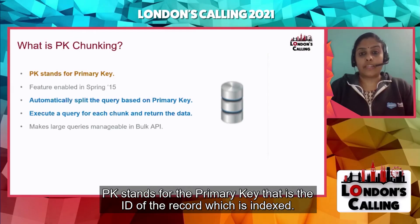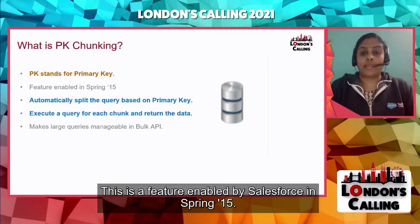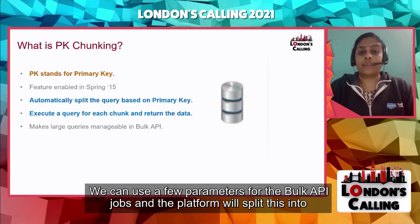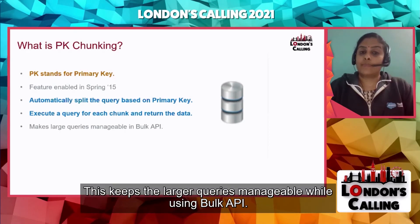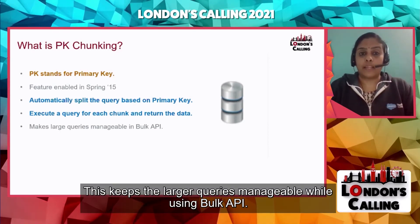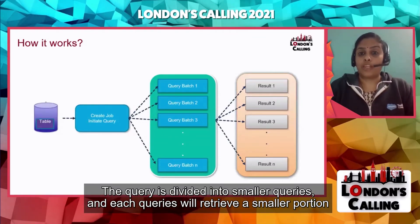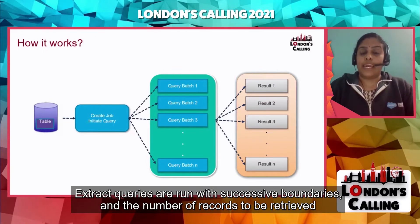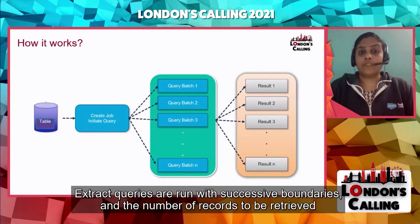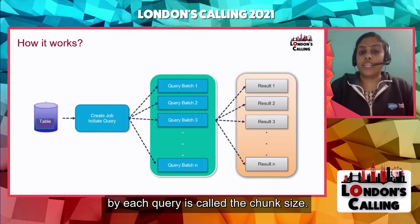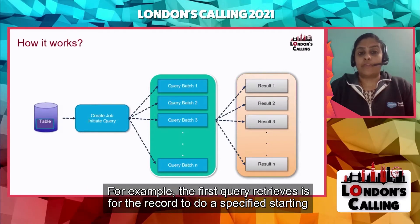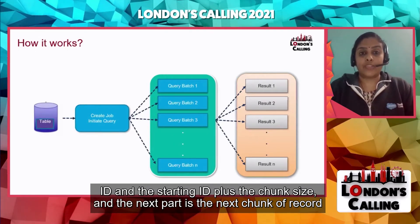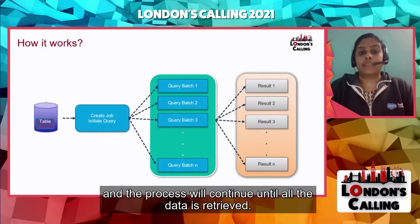PK stands for primary key — that is, the ID of the record, which is always in text. This is a feature enabled by Salesforce in Spring '50. We can use a few parameters for the Bulk API jobs and the platform will automatically split the queries into smaller chunks based on the record ID. This makes larger queries manageable. The query is divided into smaller queries and each will retrieve a smaller portion of data in parallel, making the process easy and faster. Each query retrieves records within successive boundaries, and the number of records retrieved by each query is called the chunk size.